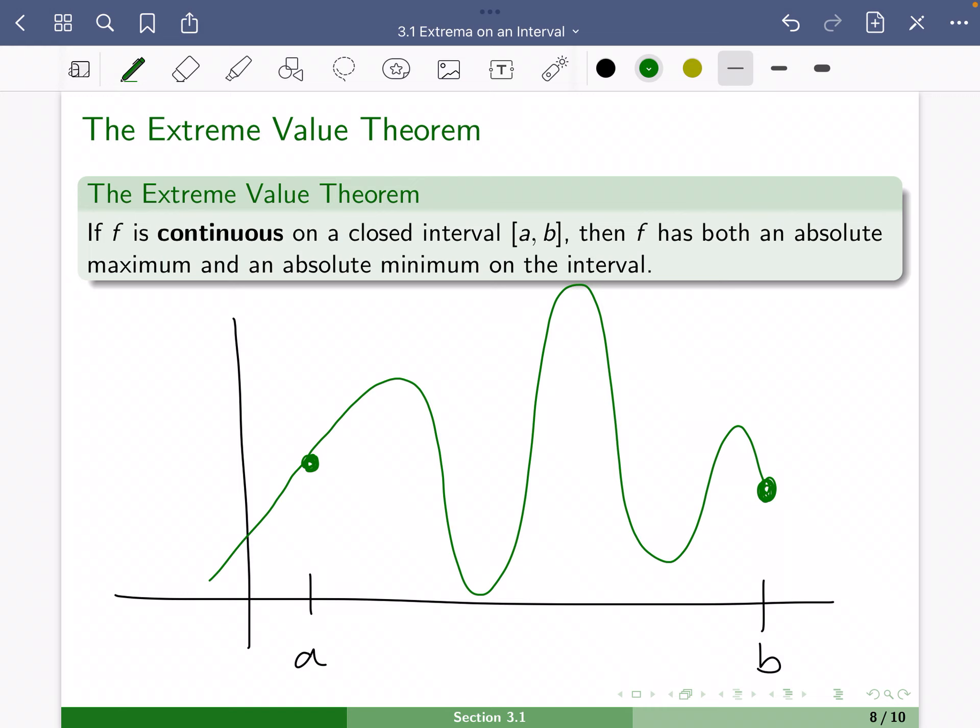But it has to. It must. There's no option except for this to happen. It must have an absolute minimum. It must absolutely have an absolute maximum. So both the maximum and minimum in that interval must occur.